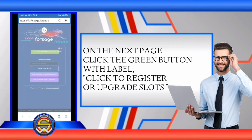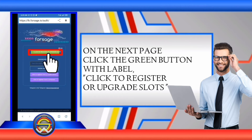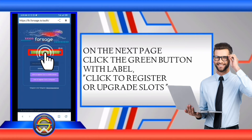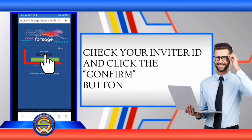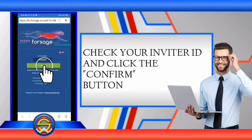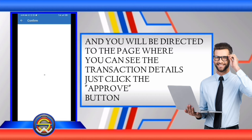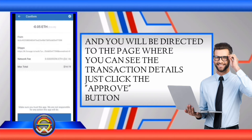On the next page, click the green button scrolled down labeled 'Click to Register or Upgrade Slots.' Check your inviter ID and click the confirm button. You will be directed to the page where you can see the transaction details. Just click the approve button.